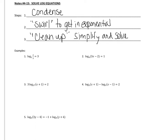Moving on to number four — if you want to pause the video and try this one on your own, you can, then press play when you're ready. First of all, we need to condense, because it's not in a single log — we have two logs here. Both logs have a base of three, so we can condense into one log base three. Because we have a minus sign, the second part goes in the denominator. So we have x plus one in the numerator and x minus one in the denominator, and that's equal to two.